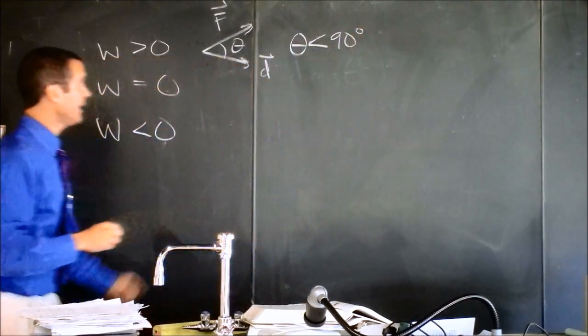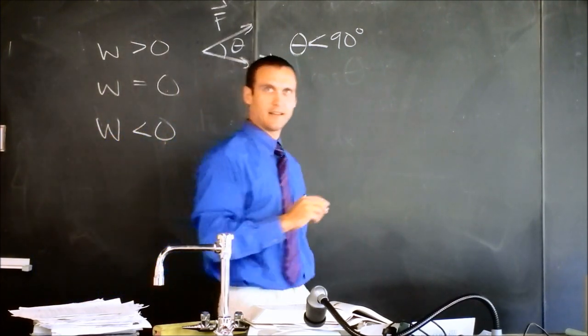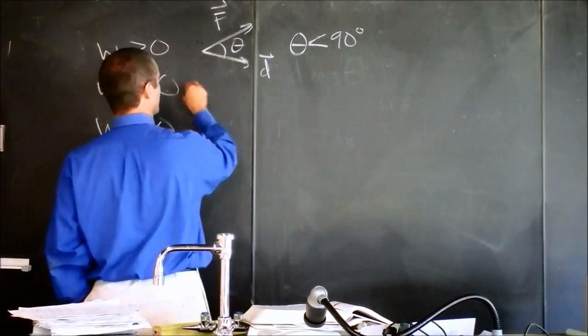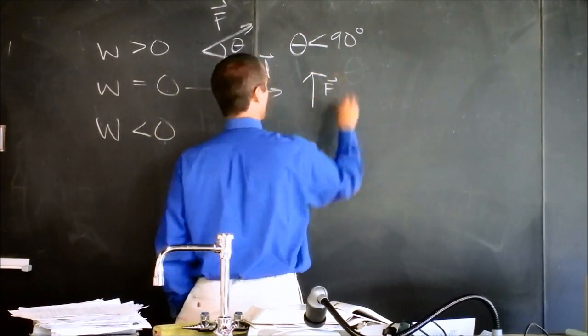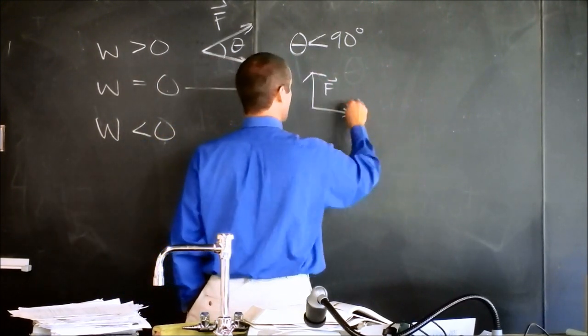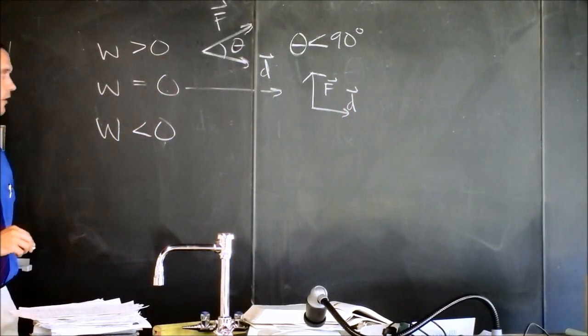What if the angle between force and distance is 90? It's zero. Right. So that would be this case, where force is, for instance, up, and the direction you're going is that direction, and you would have no work being done.